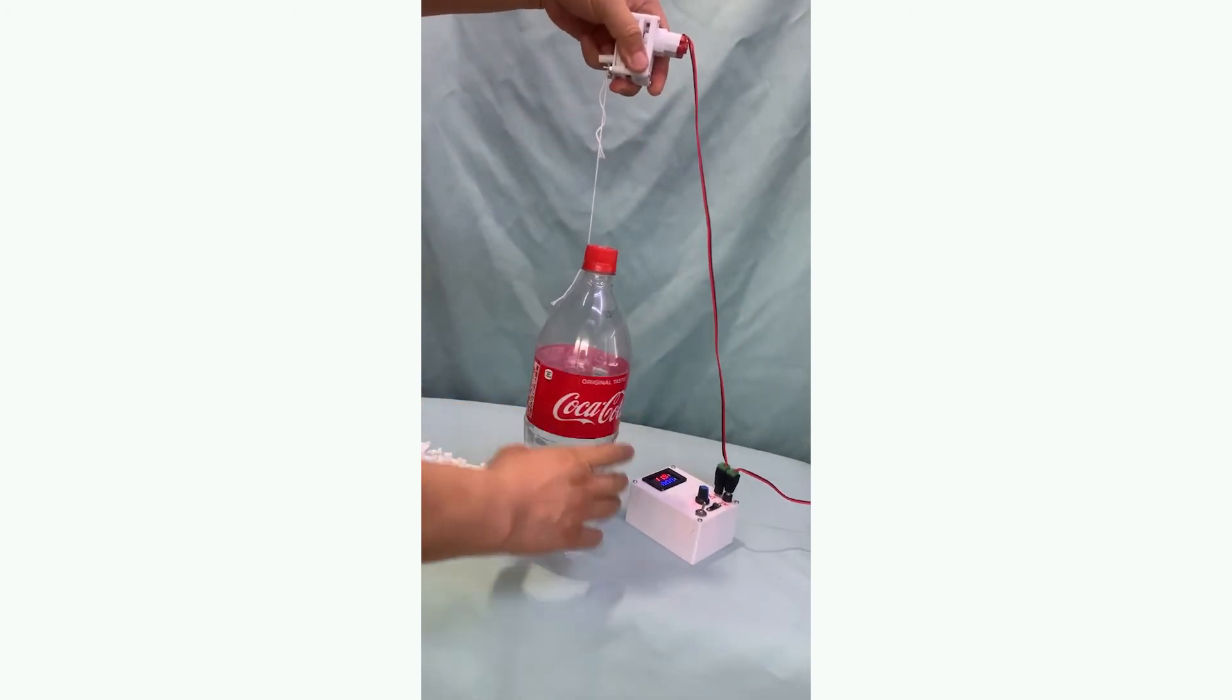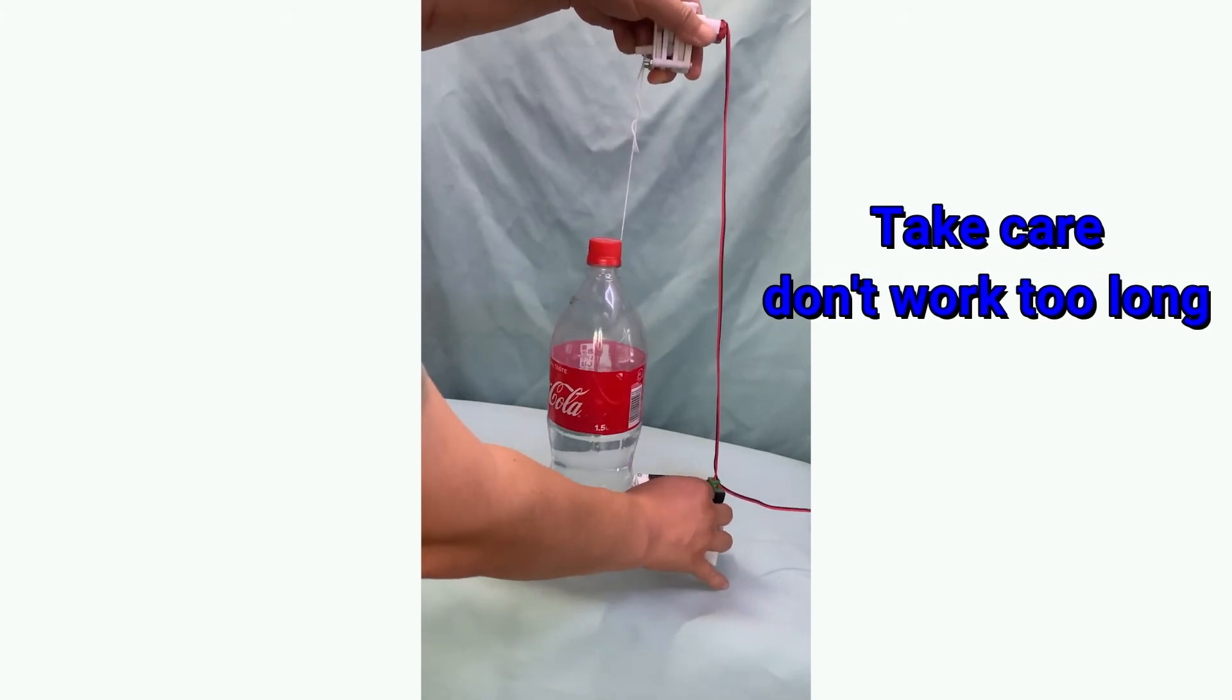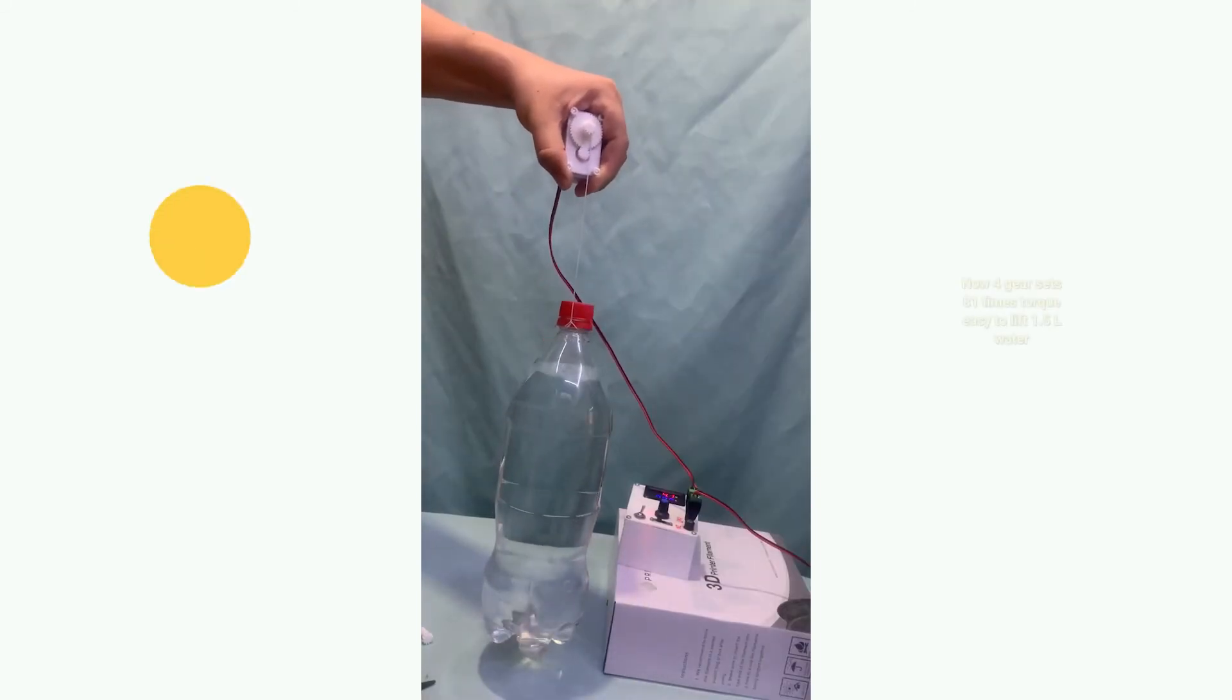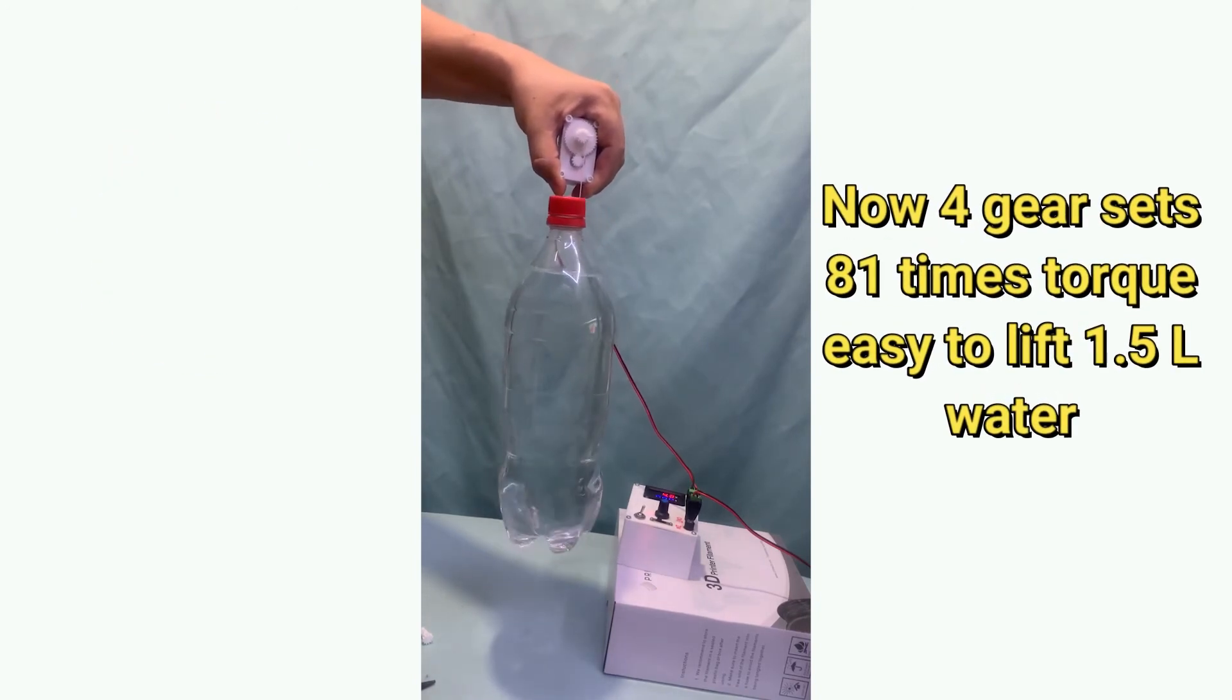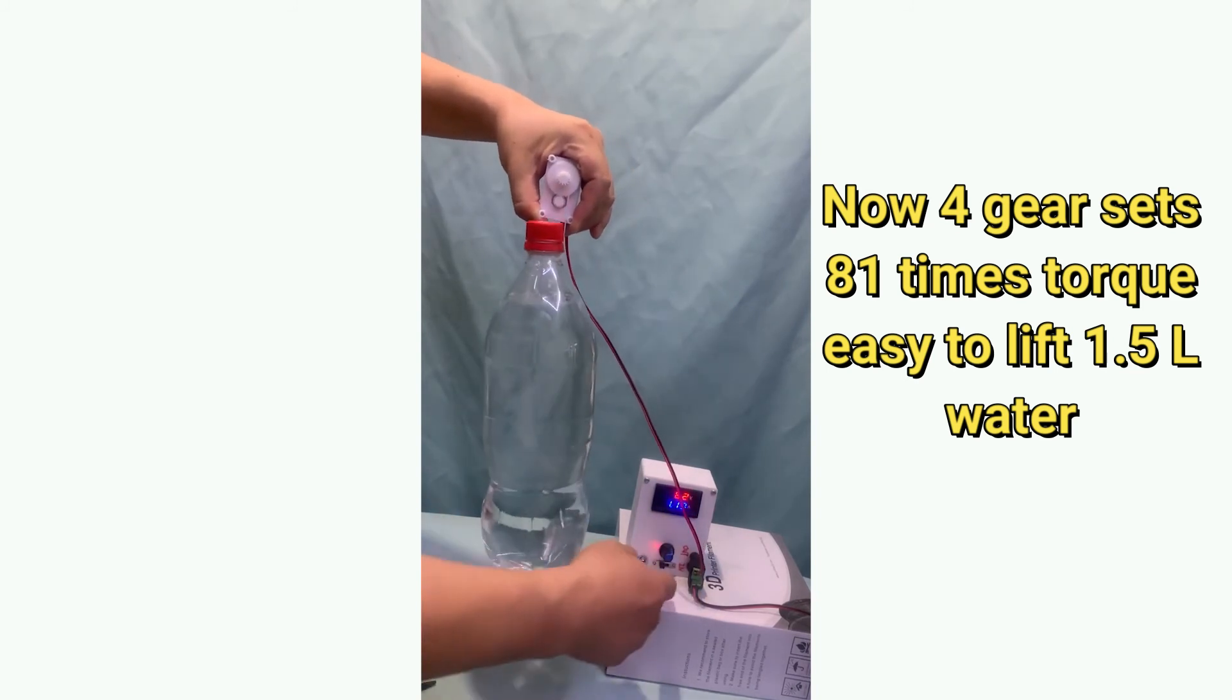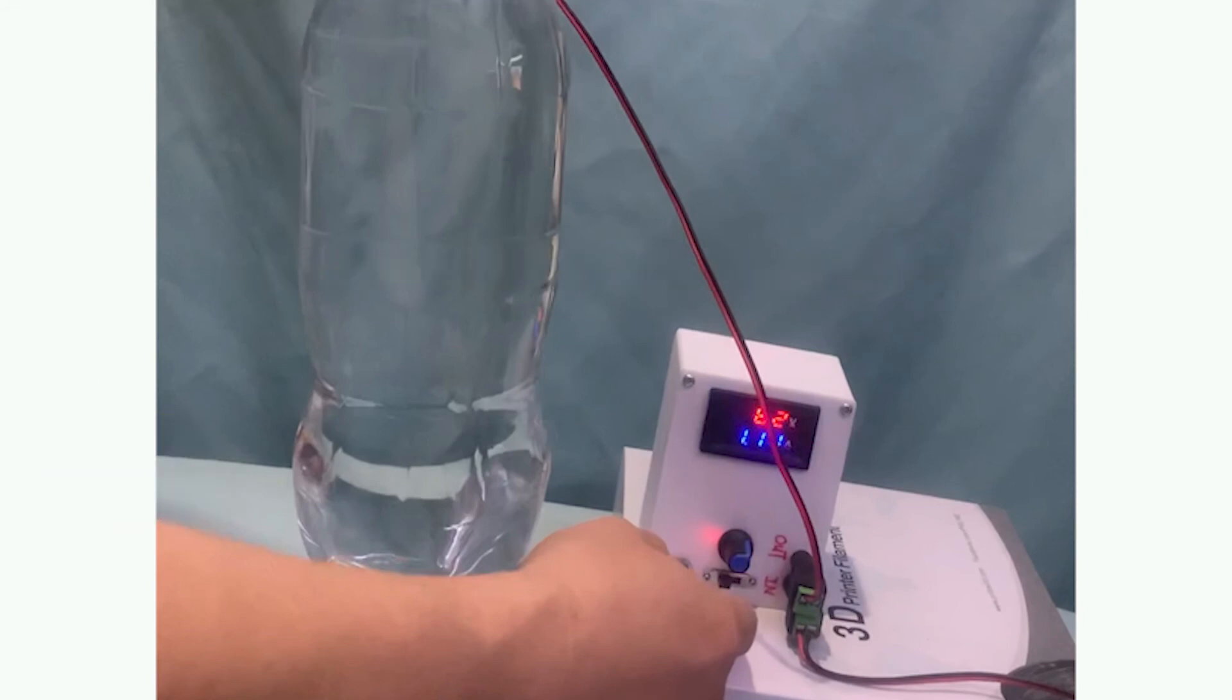Take care, don't work too long time. Otherwise, you may encounter the breakdown of the motor. Add additional gear set. It is 4 gear sets in final. The total speed will decrease to 1:81. The torque will increase to 81 times. It is very easy to lift the 1,500 ml water 1.5 kg weight.